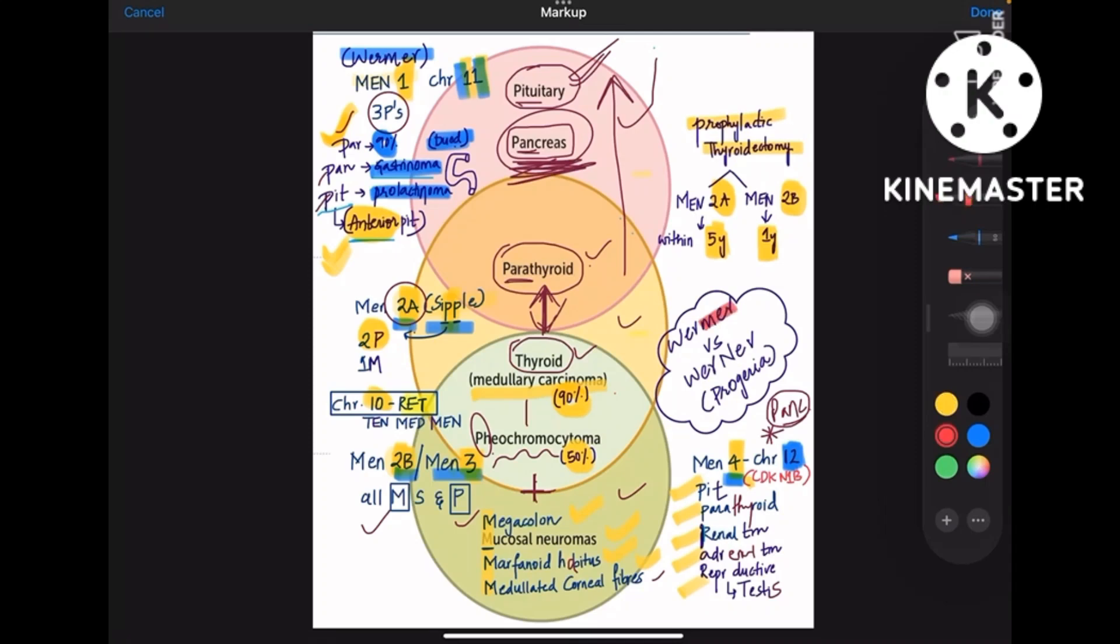One more point that you need to remember is Wermer syndrome and Werner syndrome. Wermer syndrome is MEN1 whereas Werner syndrome is something related to progeria. Don't get confused. Wermer has ME in it which is MEN syndrome, whereas Werner is progeria.